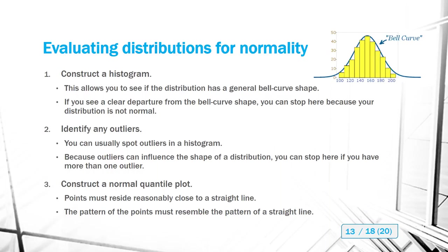If you meet those first two criteria, then you go to the third step: construct a normal quantile plot, which is very easily done in StatCrunch. The plots must reside reasonably close to a straight line in order to pass the test, and the pattern of the points must resemble the pattern of a straight line.